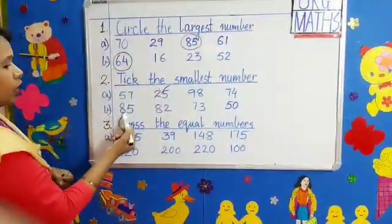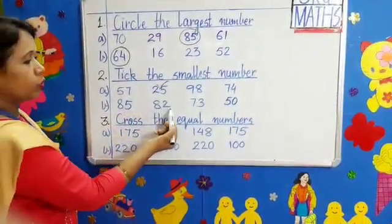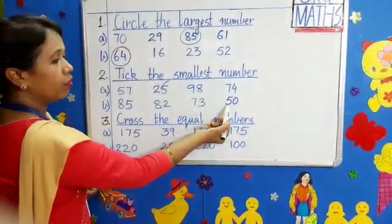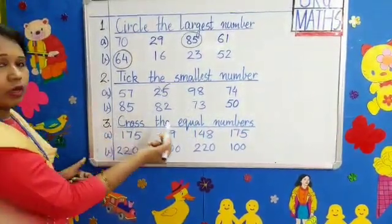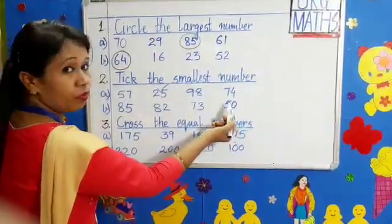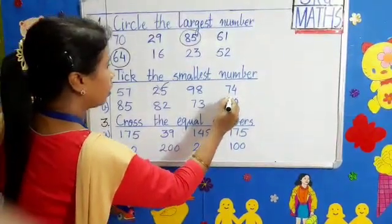Question B: 85, 82, 73, 50. Which is the smallest number, children? Very good. 50. So we will tick 50.